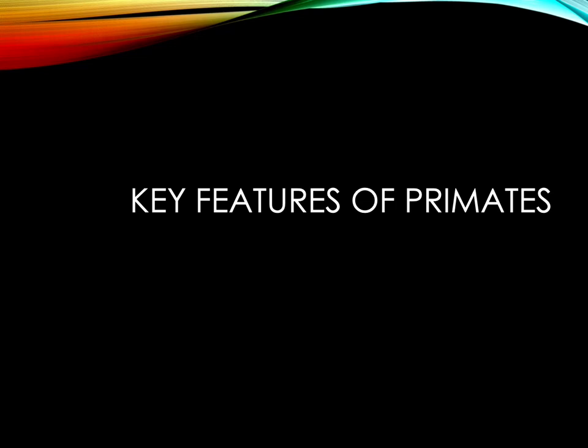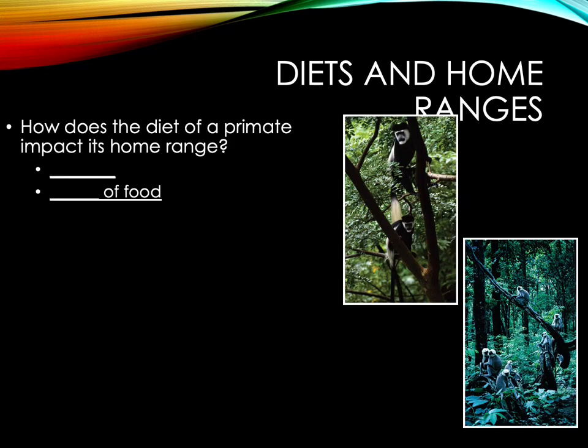Now let's think about some key features of primates. How does the diet of a primate impact its home range? First, there is availability of food, and second, seasonality of food. What a primate eats has a strong influence on the territory it occupies — its home range — and in part on behavioral characteristics such as territoriality.